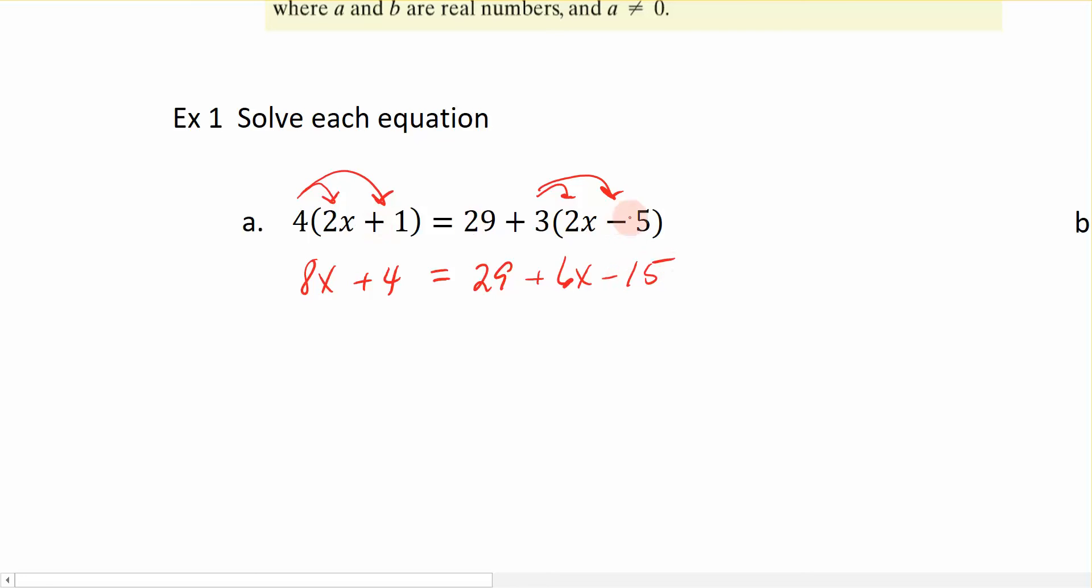So I've gotten rid of the parentheses in my equation. And the next thing I want to do is I want to try and simplify the left-hand side and the right-hand side. I cannot do anything further with the left. I can't combine these two terms over here. But on the right-hand side of the equal sign, I can combine my 29 and negative 15 because they're like terms. So that's what we want to do next. 8x plus 4 is just going to come straight down. And 29 minus 15 is going to be 14 plus the 6x that I had.